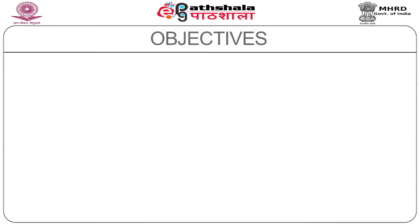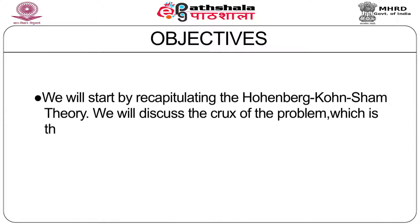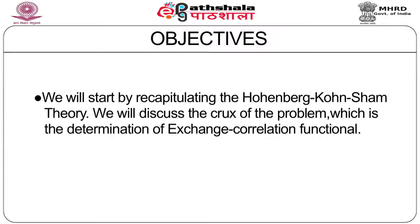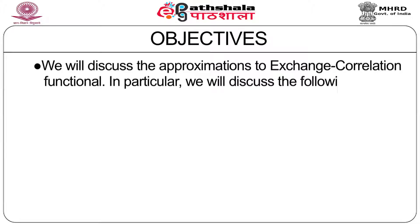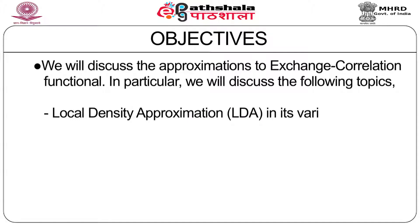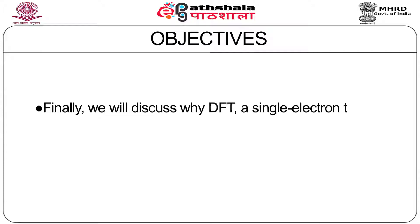The objectives of today's lecture are the following. First, we will start by recapitulating the Weinberg-Kohn-Sham theory. We will then discuss the crux of the problem, which is the determination of the exchange correlation functional. We will discuss the local density approximation, LDA, in its various flavors, and why LDA works. We will then discuss the generalized gradient approximation to the exchange correlation functional. Finally, we will discuss why density functional theory, which is a single electron theory, is successful.